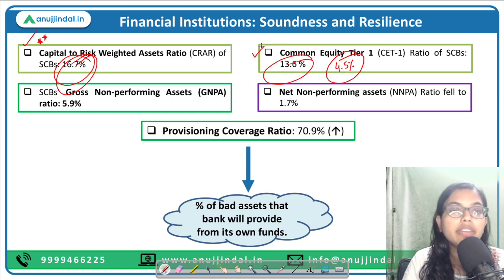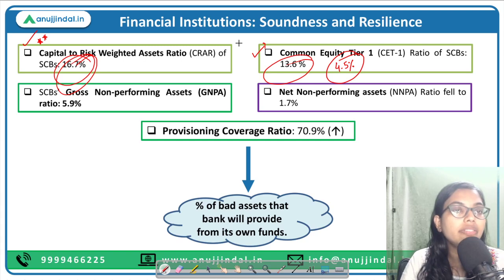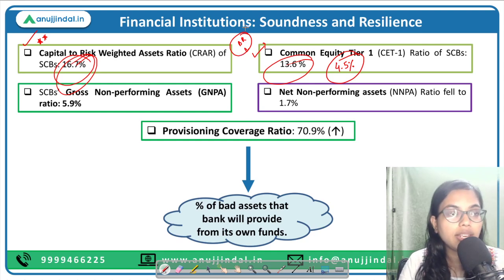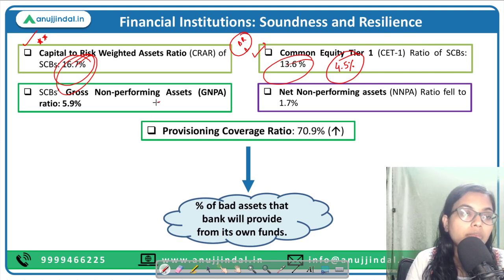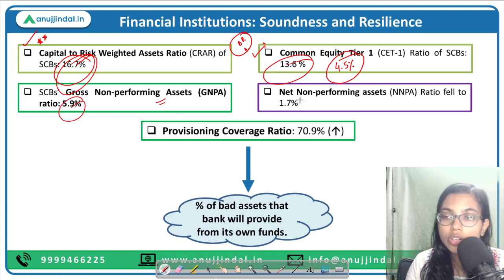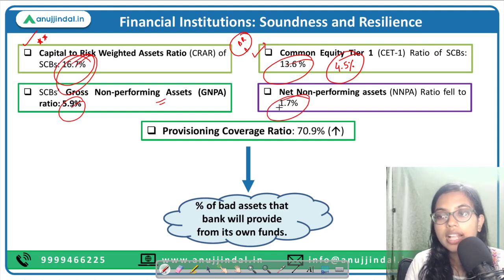In case any adverse financial situation happens, the banks are well-equipped to provide for resolution. In such a case, the bank will not face a bank run, and it can continue its business without getting liquidated. If we talk about non-performing assets, there has been a decline — our Gross NPA was 5.9 percent and our Net NPA was 1.7 percent in March 2022, which is a good number.